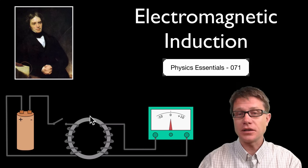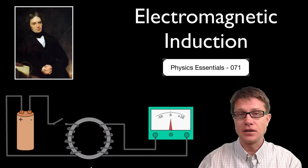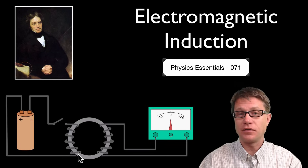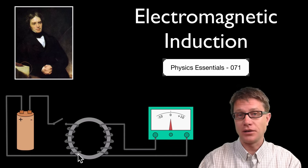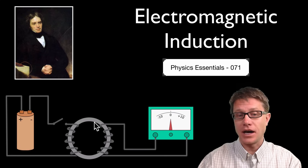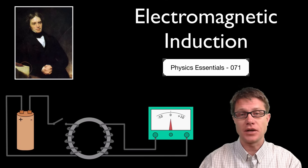We basically have two parts. We have a ring of iron, but on the left side we have an electromagnet. So you are going to connect this to a battery and that is going to produce magnetic fields on the left side. And the hope is on the right side that could produce current inside this wire, which we would be able to measure using a galvanometer.